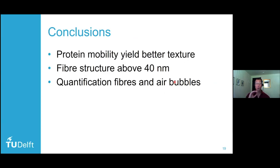So the conclusions from the work that Bai Tian and I did was that protein mobility yields better texture for your meat analogues. We quantified where you get a fiber structure in these sheared systems. And that's happening above length scales of 40 nanometers. And you can quantify fibers and air bubbles using neutron scattering techniques.